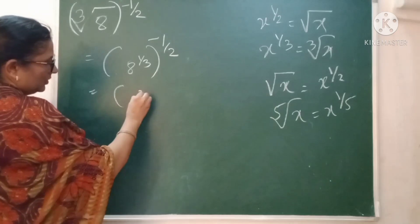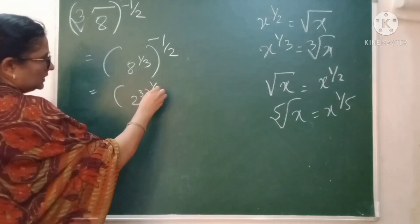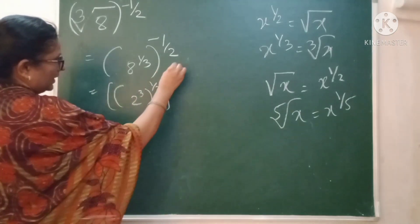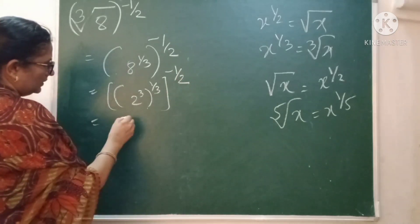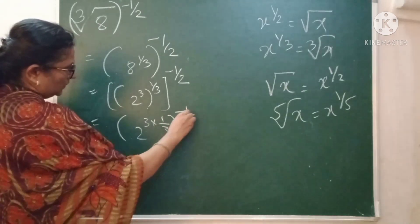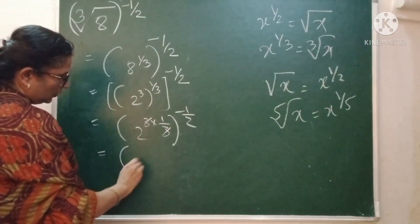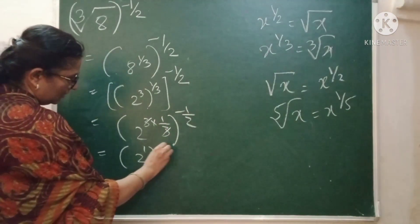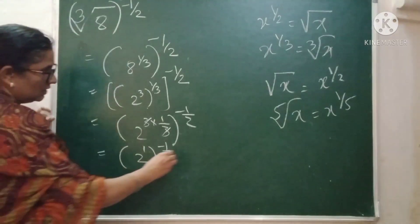8 can be written as 2Q. See, how to simplify this one? Raise to 1 by 3 and this one minus 1 by 2. This is 2 raise to 3 into 1 by 3 raised to minus 1 by 2. 3 and 3 goes. You get with 2 raise to 1 and minus 1 by 2.